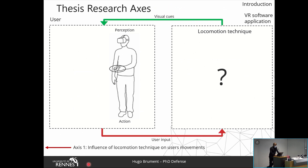The first research axis, represented by the red arrow, is the influence of the locomotion techniques on user movement — focusing on users' action. The second, represented by a green arrow, was how we could alter the perception of rotation gains in virtual environments — focusing on users' perception.